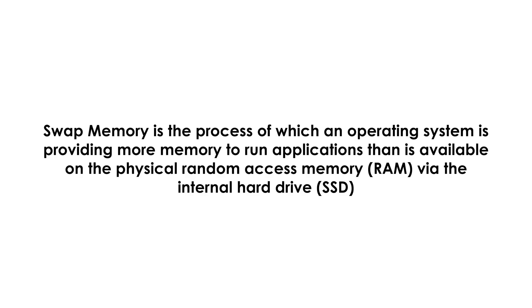Swap memory is the process by which an operating system provides more memory to run applications than is available on the physical RAM, via the internal SSD. In the simplest terms, if you have a lot of programs open and the total RAM required is greater than the physical RAM available — whether 8 or 16 gigabytes — the Mac OS resorts to using the internal SSD, writing data onto it to compensate and keep applications running efficiently.